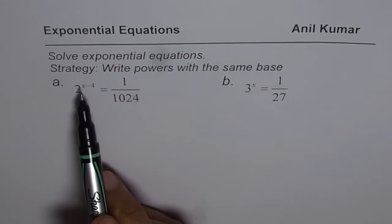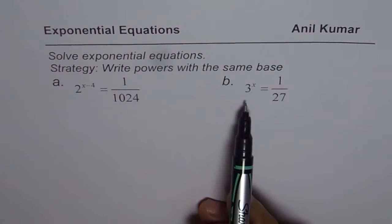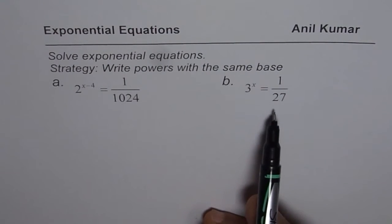The first one is 2 to the power of x minus 4 equals 1 over 1024. The other one is 3 to the power of x equals 1 over 27.